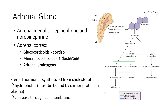Now we'll talk about our adrenal glands, which are located on the kidneys. The adrenal gland has two main areas: the cortex and the medulla. Within the medulla, we make epinephrine and norepinephrine — the catecholamines that function in the sympathetic nervous system to drive the fight-or-flight response. In the adrenal cortex, we make several steroids, including our glucocorticoids such as cortisol, our mineralocorticoids such as aldosterone, and our adrenal androgens. Remember that steroid hormones are made from cholesterol, making them hydrophobic or lipophilic, so they must be bound by a carrier protein in plasma, but they can also pass through the cell membrane acting on nuclear receptors to regulate gene expression.